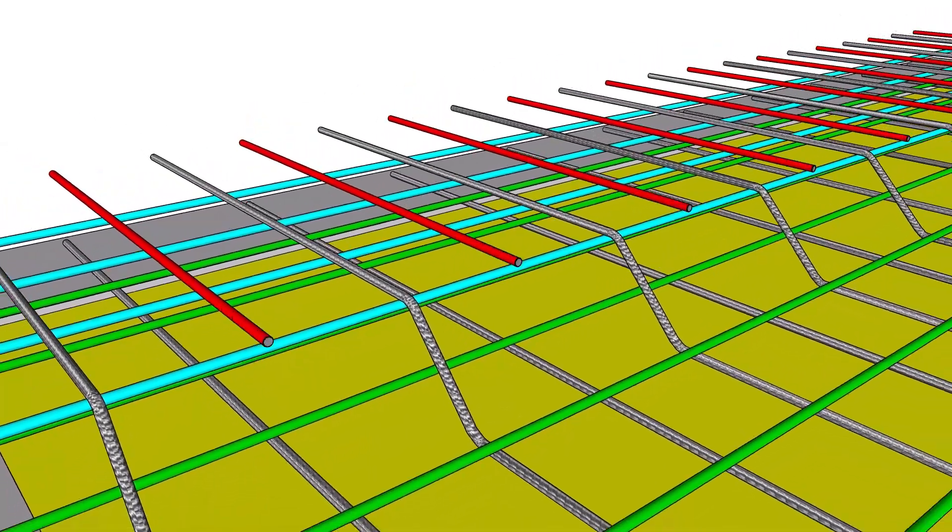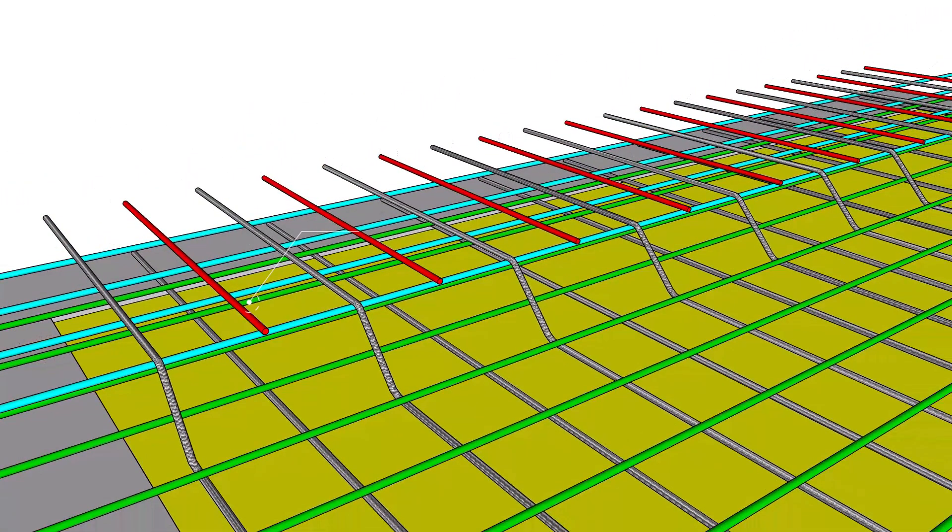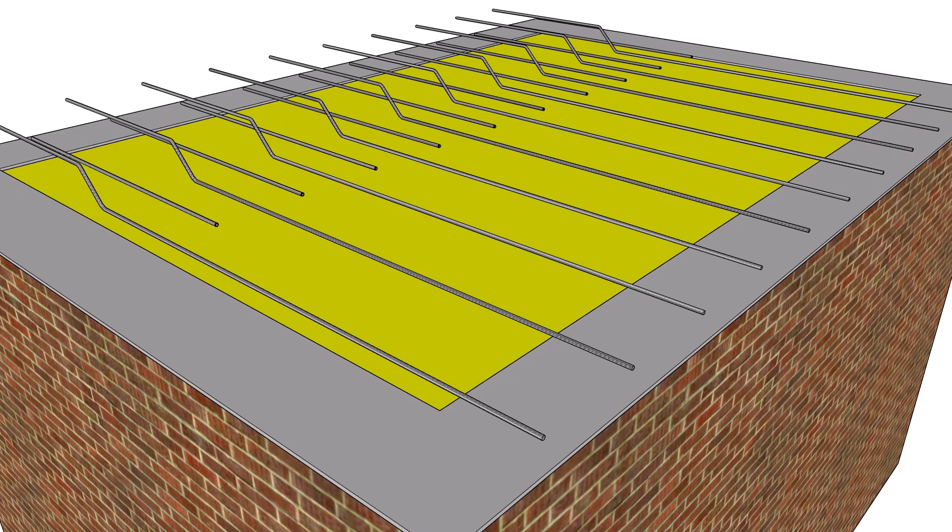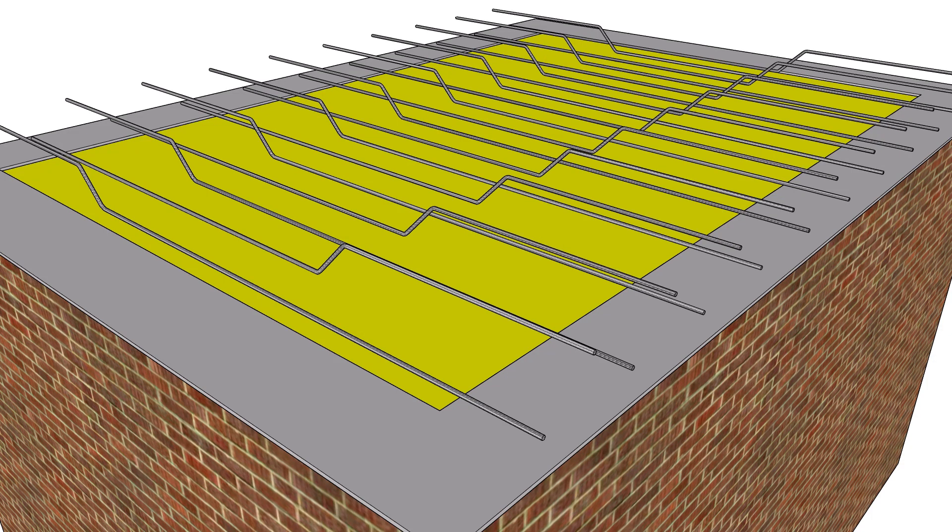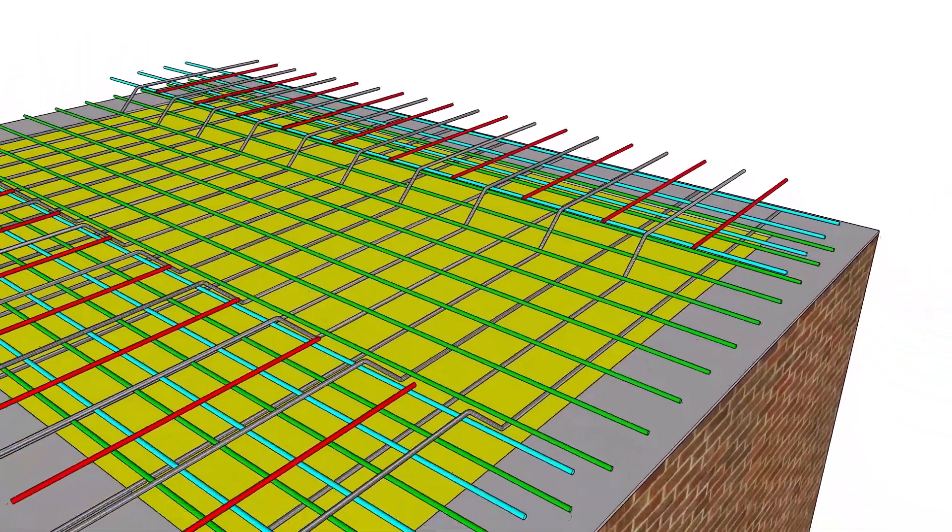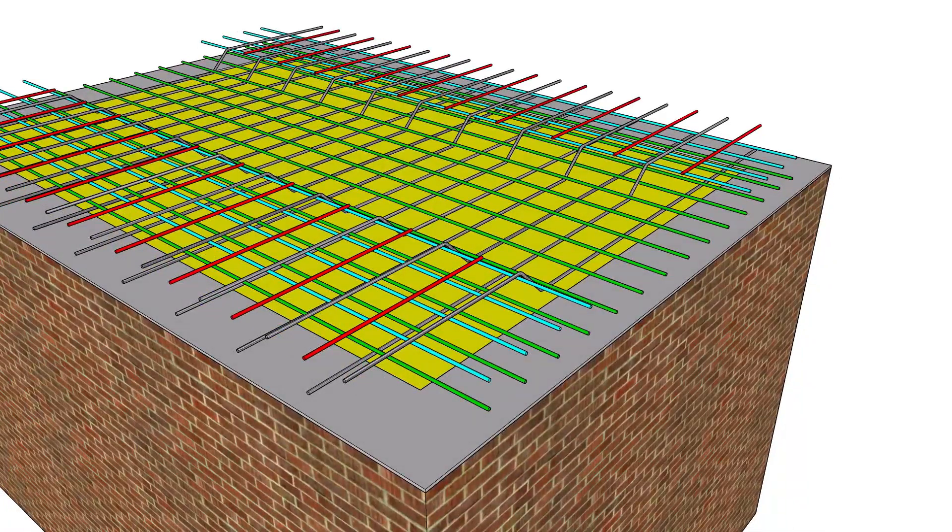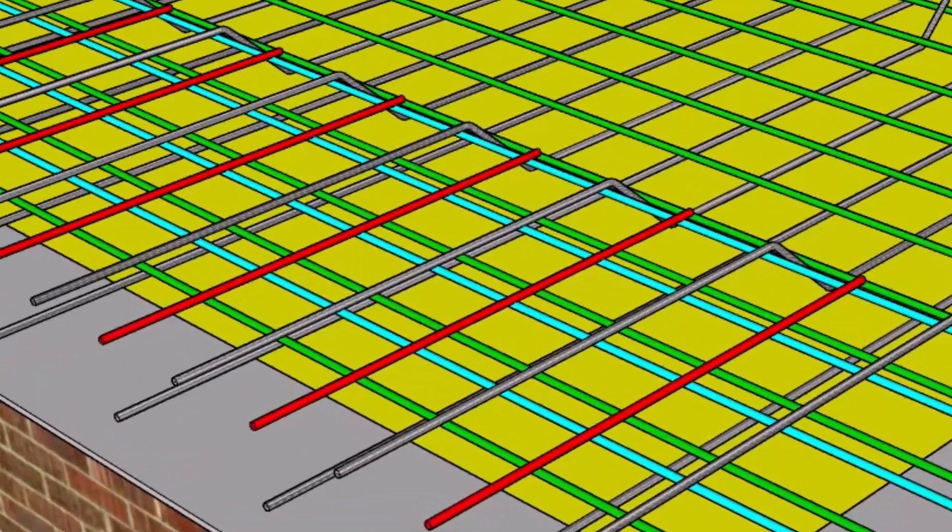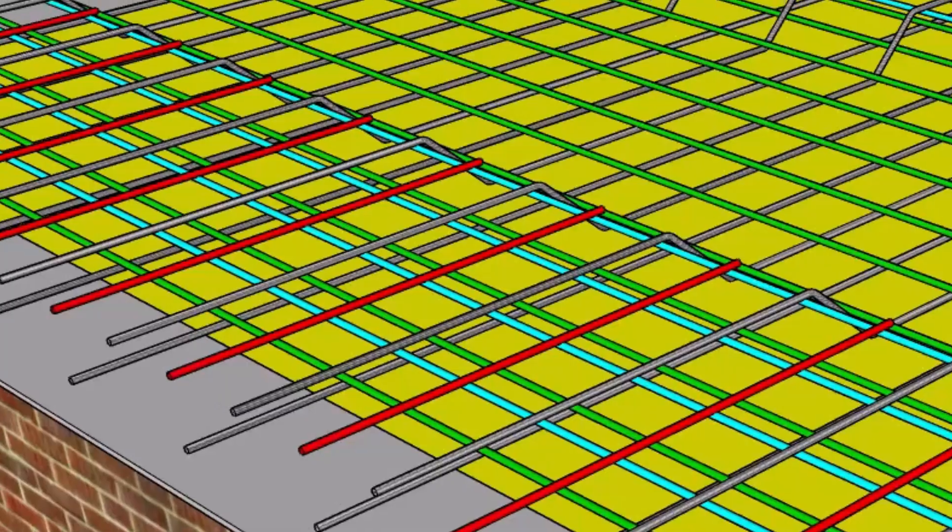Finally, let's discuss about the top extra bars in one way slab. Top extra bars are added when the main reinforcement consists of alternatively bent up bars, helping to resist negative bending moments at the ends. However, if the main bars are cranked at both the ends, then we don't need to provide top extra bars. These top extra bars are spaced at twice the spacing of main bars.